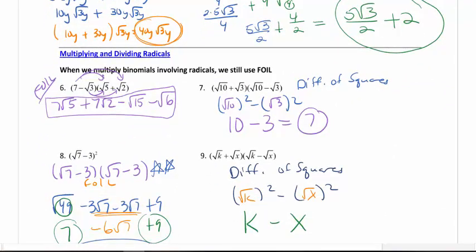Foiling is the same. Difference of squares is the same. Perfect squares are the same. Please practice. Really important idea, though, is difference of squares. You should not ever end up with a radical left. It should disappear once you've used the property.